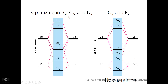In B₂, C₂, and N₂, there is SP mixing. This sigma-G from the 2s and this sigma-G from the 2p have the same symmetry, so they interact. This 2 sigma-G will be elevated — the poor person gets poorer, the rich person gets richer. The 2 sigma-G ends up sitting on top of the 1 pi-U. The 1 sigma-G is still lower than 1 sigma-U; it's just even lower. Similarly, this 1 sigma-U may interact with 2 sigma-U — the 1 sigma-U is lowered and the 2 sigma-U has even higher energy.